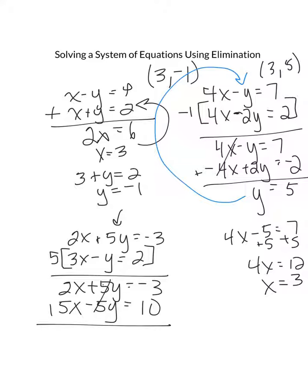15 and 2x gives me 17x equals 7. Divide both by 17, x will equal 7 over 17.